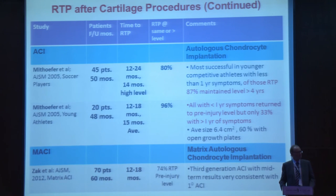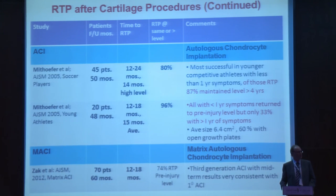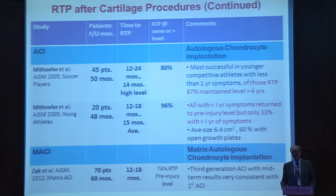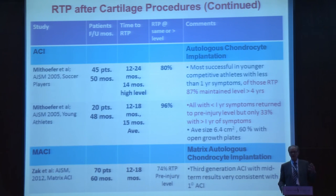Looking at soccer in 2005, with 50 patients from multiple centers, it was found most successful in younger patients with less than one year of symptoms, and 87% of those who returned to play maintained their return four years later. In another study with an average lesion size of 6.4 cm², using ACI, all patients with symptoms less than one year returned, but only 33% of adolescent athletes with symptoms for more than one year were able to return — chronic cases are more difficult to treat. And with MACI (third-generation ACI), 74% return to play was found.